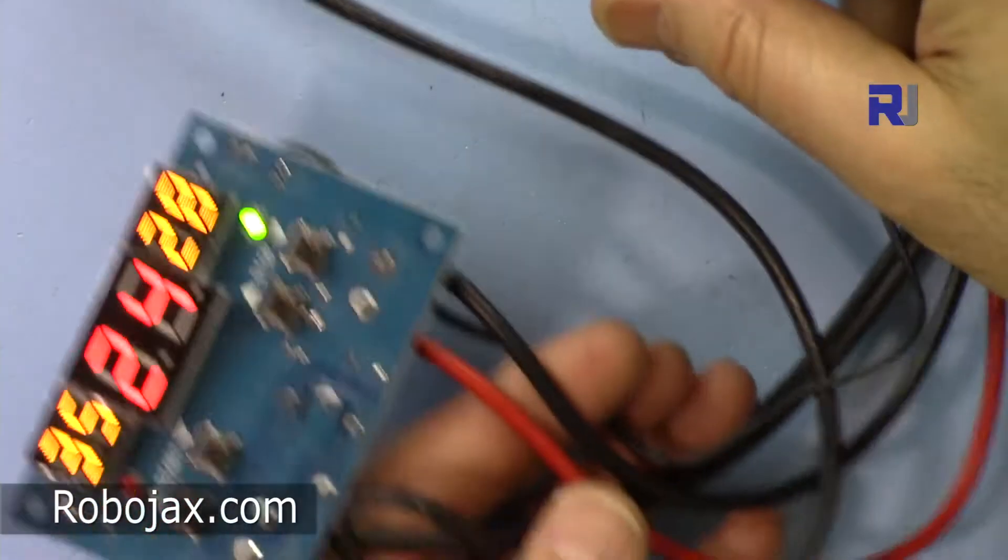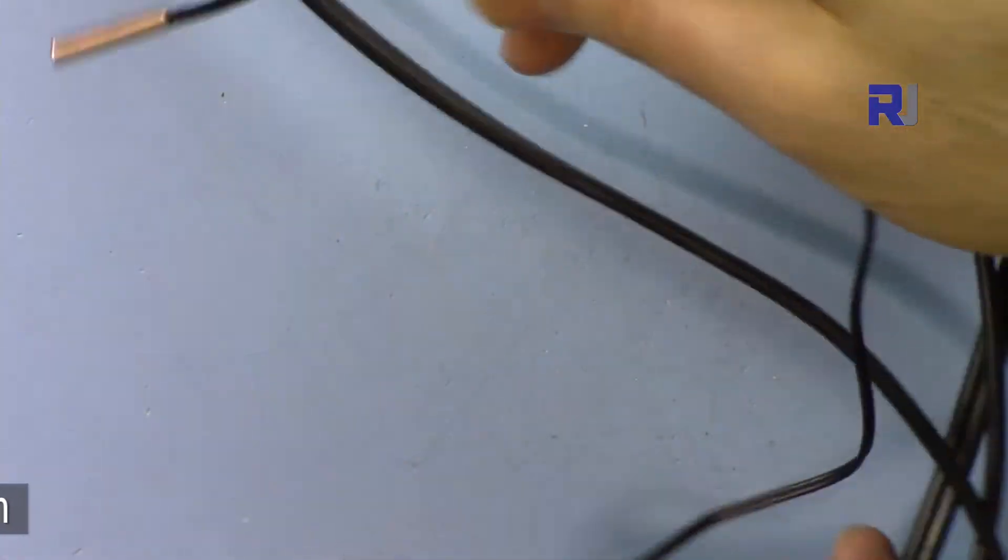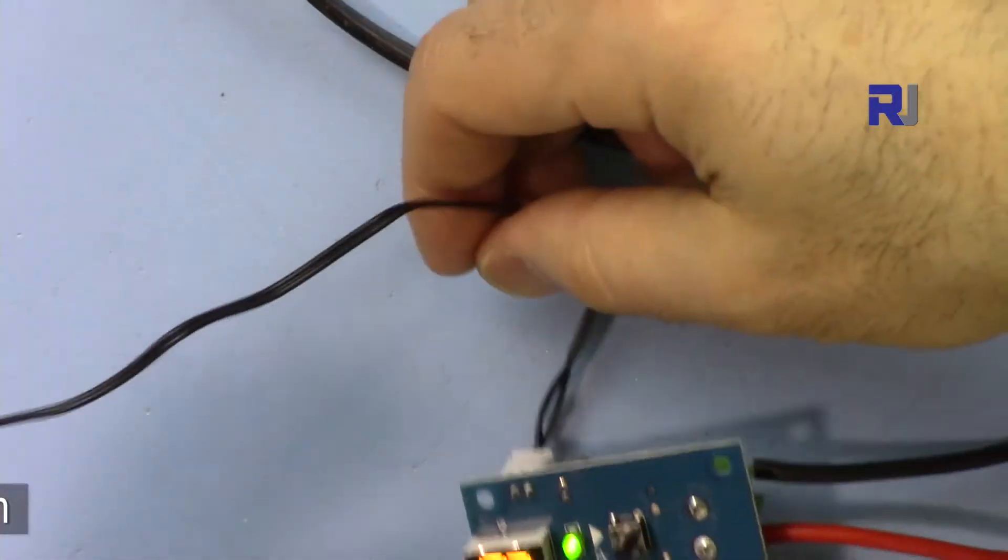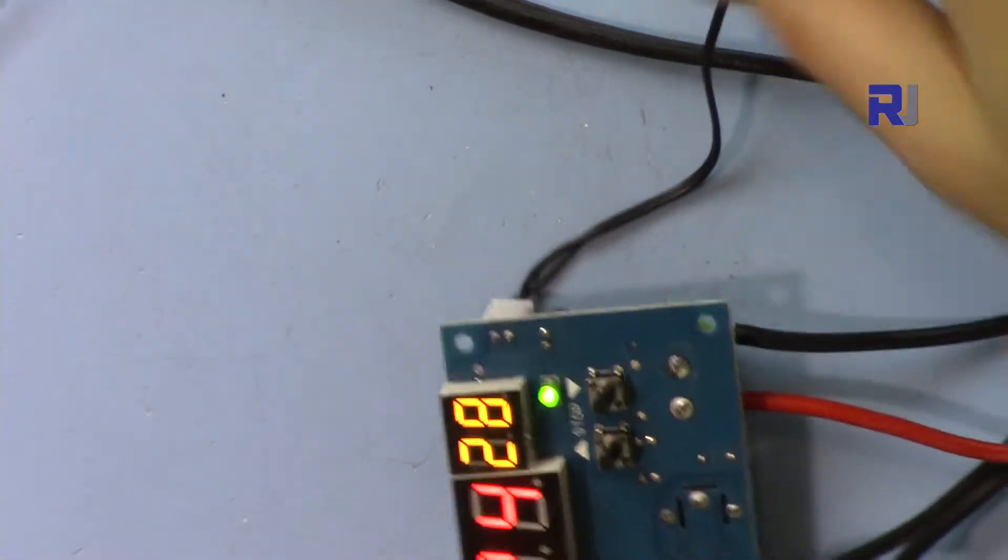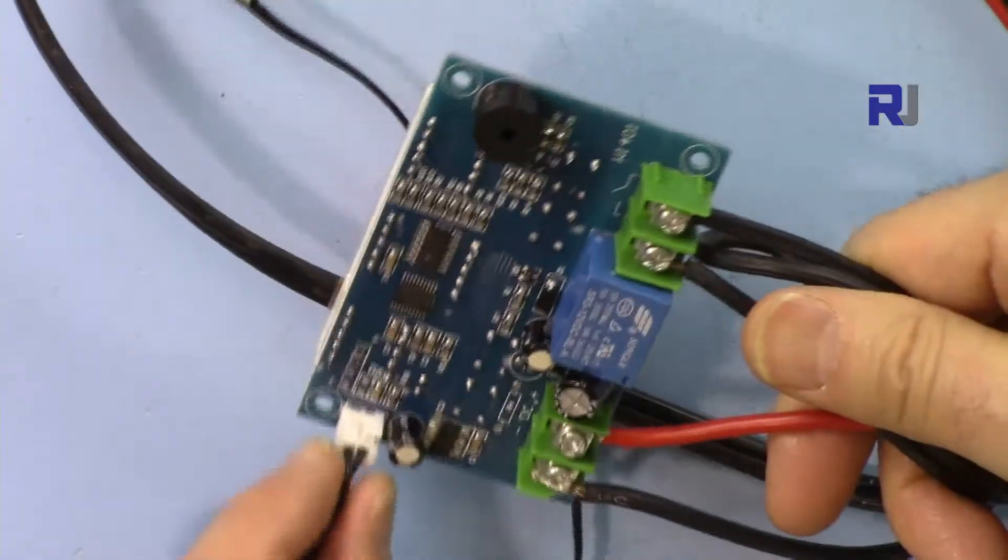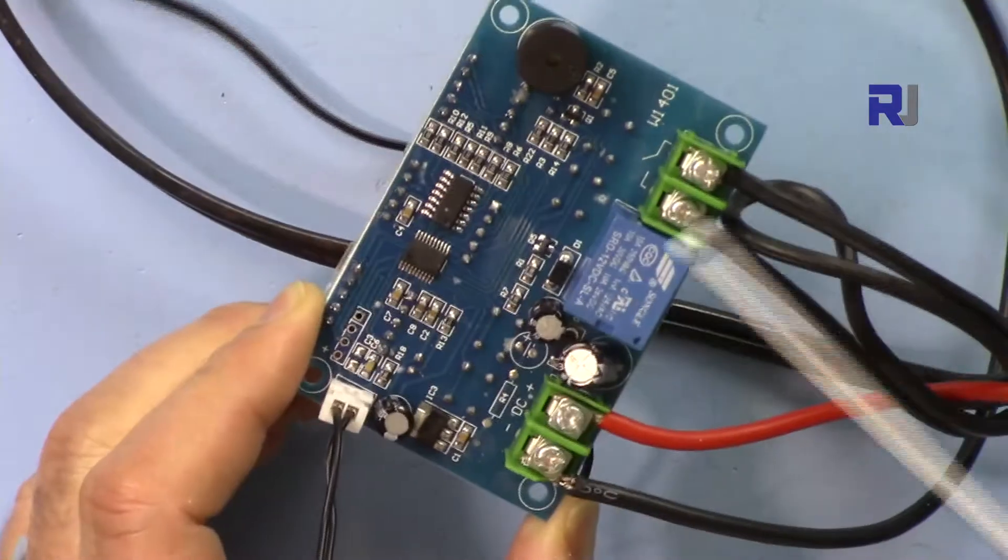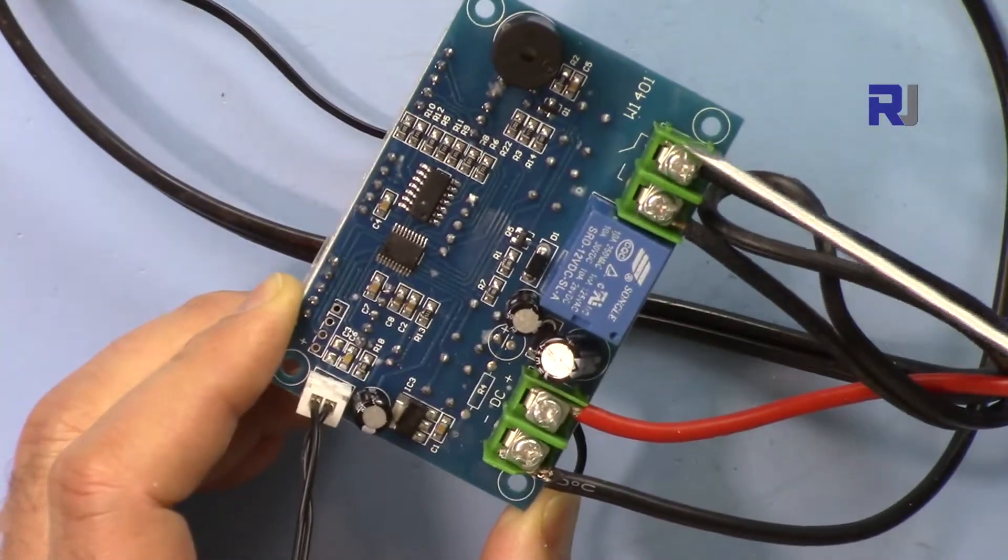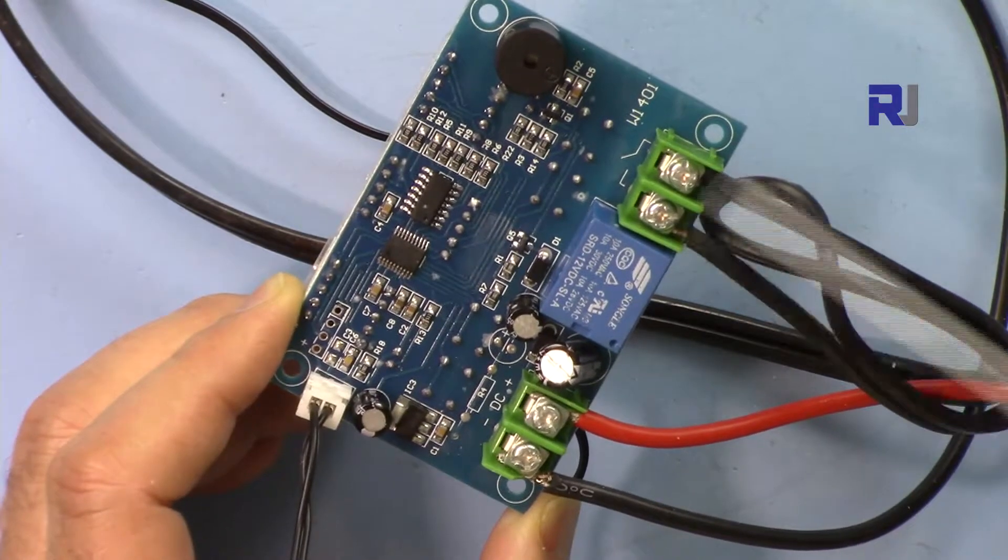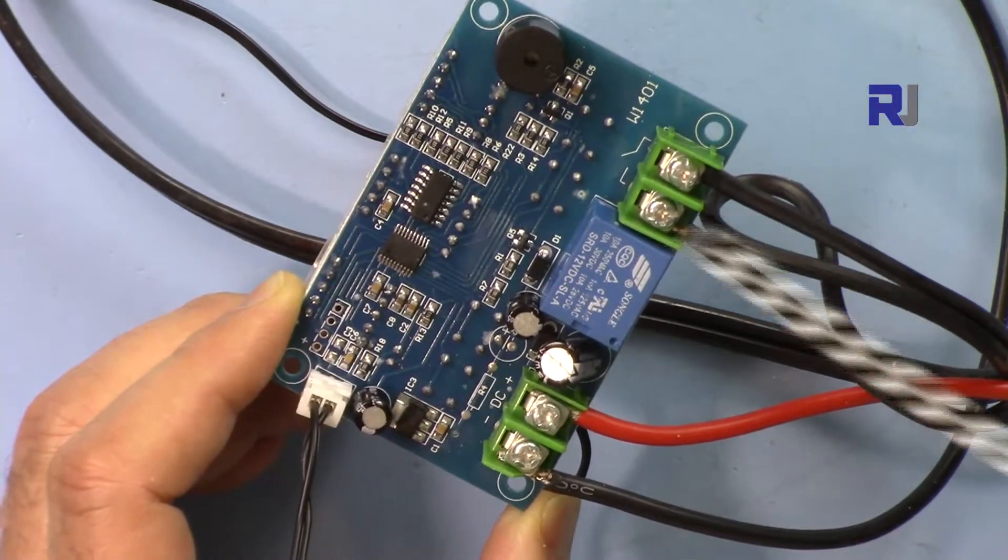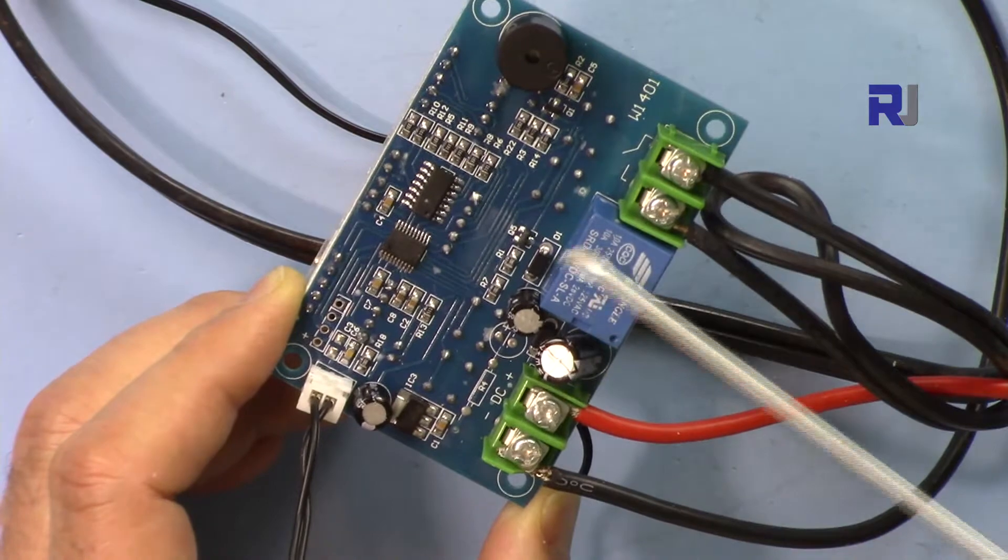It has an NTC temperature sensor. This is water resistant and the length of this one is around 30 centimeters, plugged on this side. On this side we have a relay and AC or DC load control. There are only two wires, two terminals that you can connect. This relay can handle up to 10 amperes.